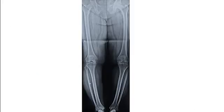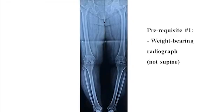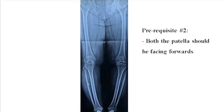The first step is to obtain long leg radiographs that include both the hip, knee, and ankle joints to define coronal plane deformity. This radiograph must be obtained in the standing position, and both patellae should be facing forwards.